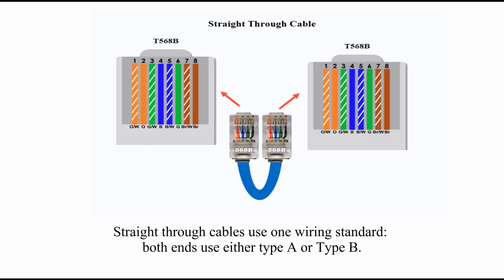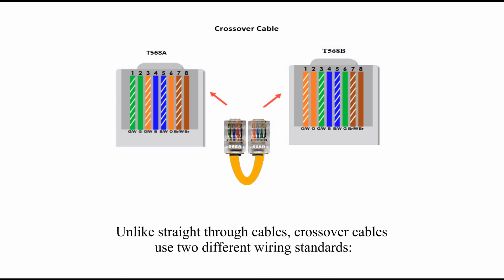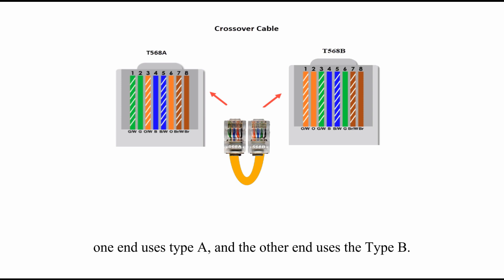Straight-through cables use one wiring standard — both ends use either type A or type B. Unlike straight-through cables, crossover cables use two different wiring standards: one end uses type A and the other end uses type B.